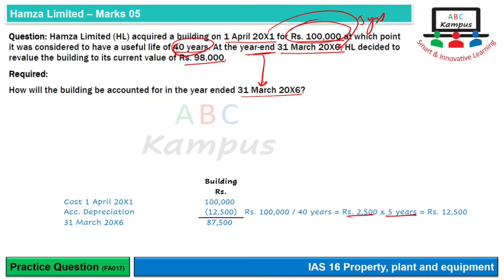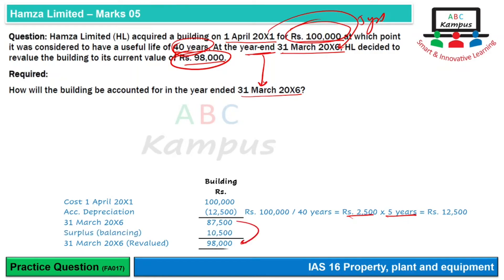Ab humein revalue karna hai 98,000 par. To jo difference hai wo revaluation ka gain hoga, kyunke value badh rahi hai. To 10,500 ka hamare paas revaluation ka gain aa jaata hai.